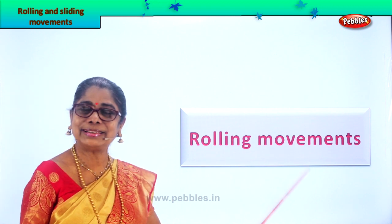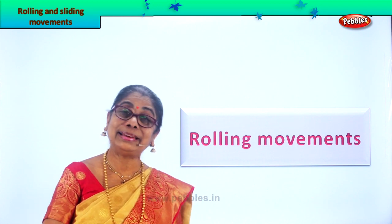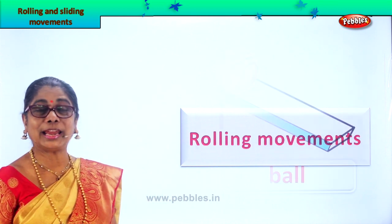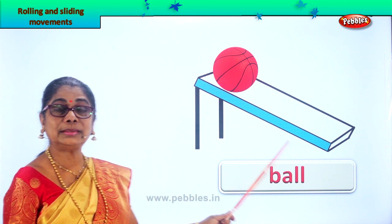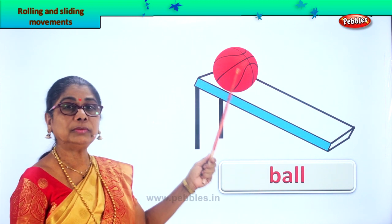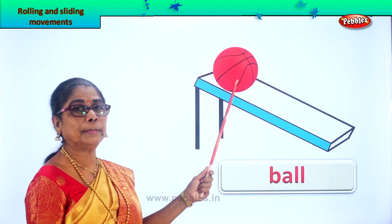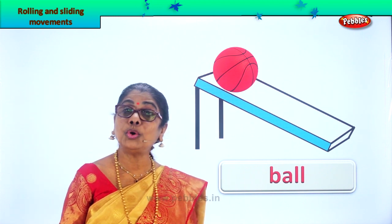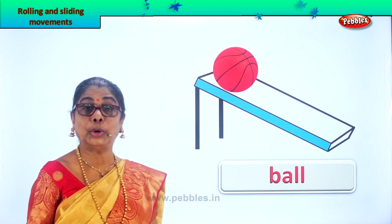Rolling movements — some of the things we are going to look at. Let's look at our first picture. Here is a slanting board, and if you put a ball, it will just roll down. Without your help, you simply place a ball over there and it will roll. A ball can roll down a slanting board.